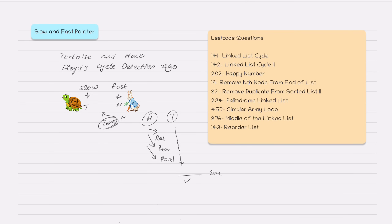The tortoise just kept on moving persistently and crossed the finish line to win the race. The lesson from the tortoise is to be perseverant and hardworking — just keep moving forward. The hare thought his speed alone would win, but together these characters generate a coding pattern that can solve many interview questions easily.